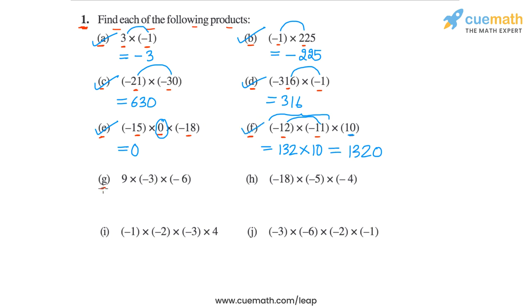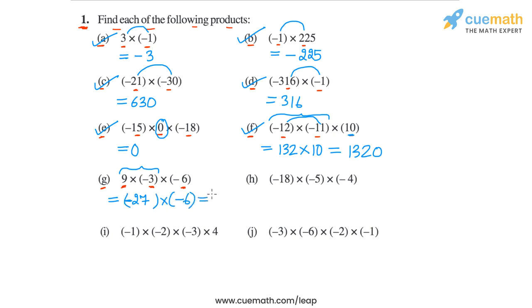Then in part G, we have to calculate 9 into minus 3 into minus 6. There are three terms in the product. So let's first calculate 9 into minus 3, which equals minus 27, because the magnitude is 27 and minus 3 is negative. So we have minus 27 into minus 6, and this product will be equal to 162.